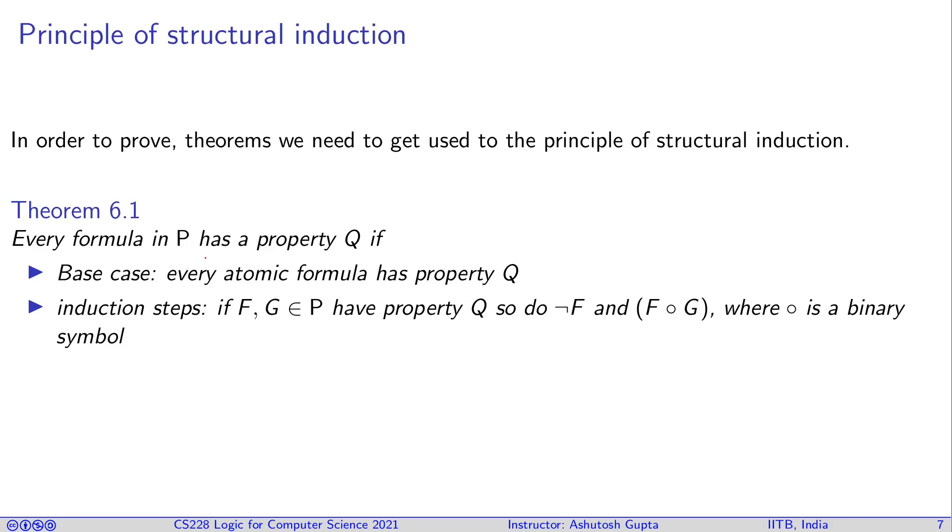If you want to show that every formula has some property Q, you do two things. In the base case, show every atomic formula has property Q. Then in the induction steps, assume that formulas F and G have that property, and show that ¬F has that property and any binary operator (F ∘ G) where ∘ is a binary symbol also has that property. Then you can say that every formula in P has property Q.